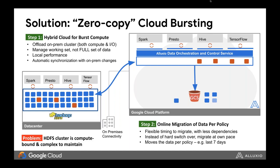The second thing Alluxio helps with is migrating data to Google Cloud Storage. You can set policies in Alluxio — for example, you can say that all data created in the last seven days should migrate to the public cloud. This makes the process of migrating to a full cloud solution much more gradual, and switching from on-premise infrastructure to a cloud-native infrastructure is much easier with this solution.